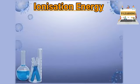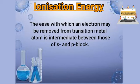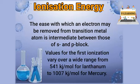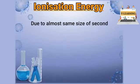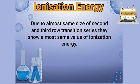The values numerically vary around 500 kJ. For second and third row transition elements, atomic radii are almost similar. So the size is similar, and therefore the ionization energy variation will be very low. So these two series' elements have almost similar ionization enthalpies.